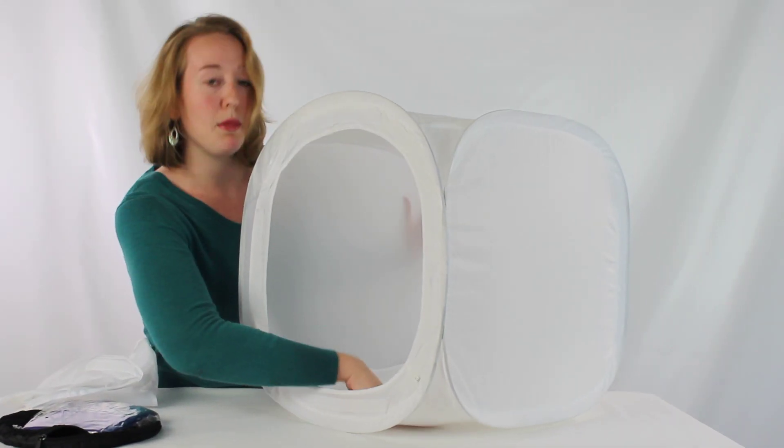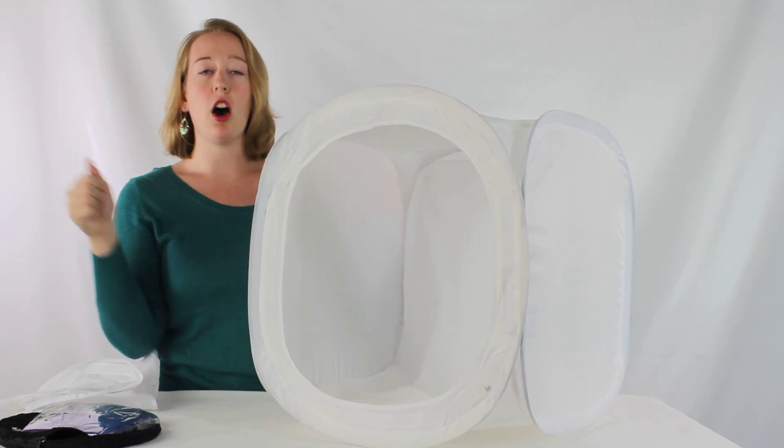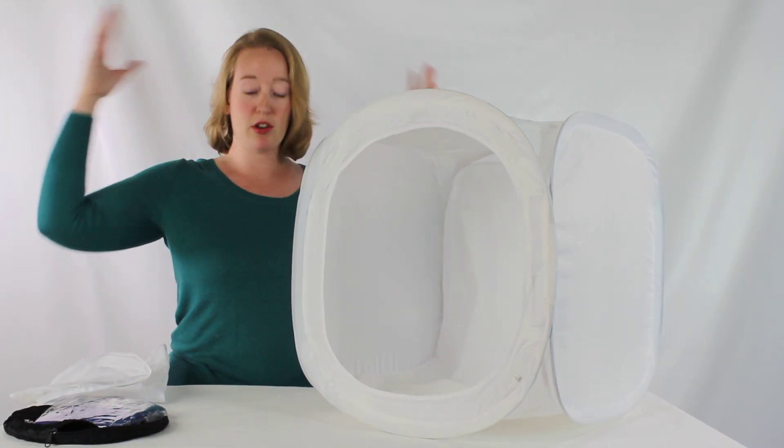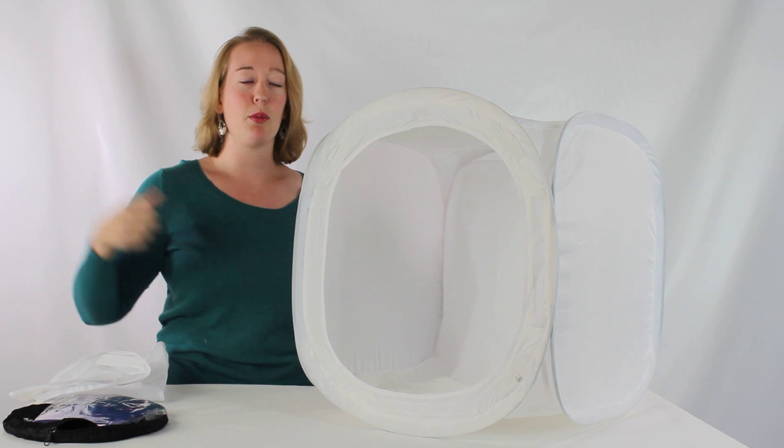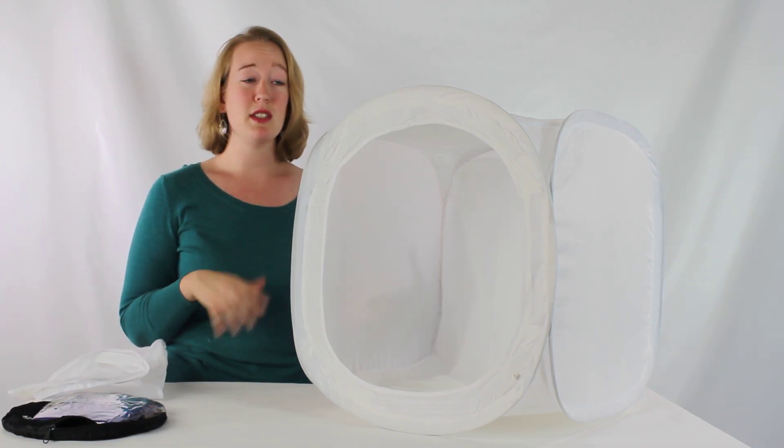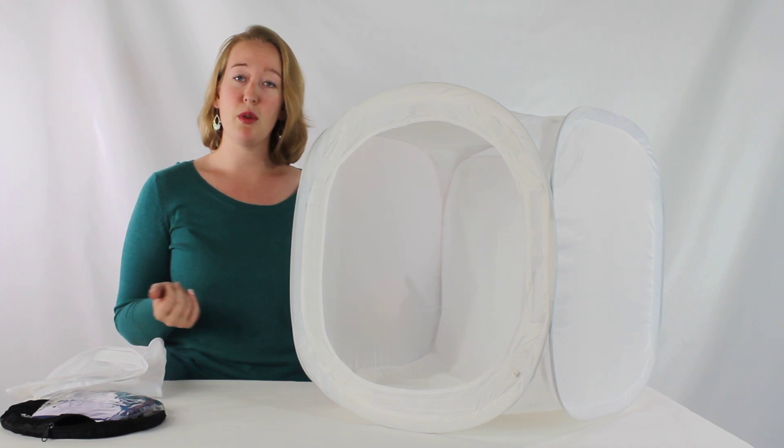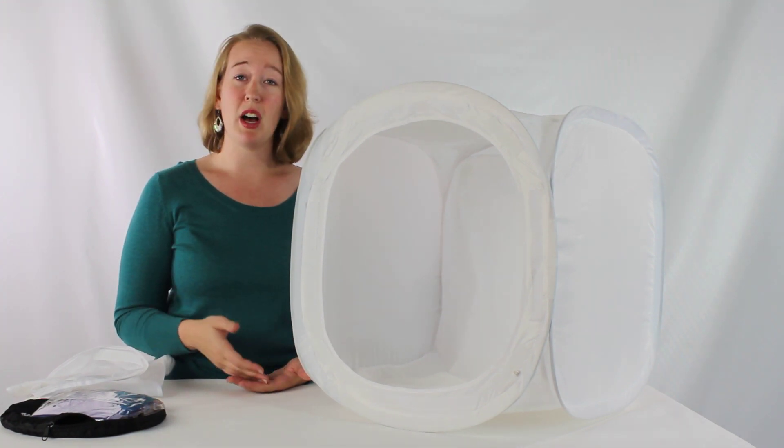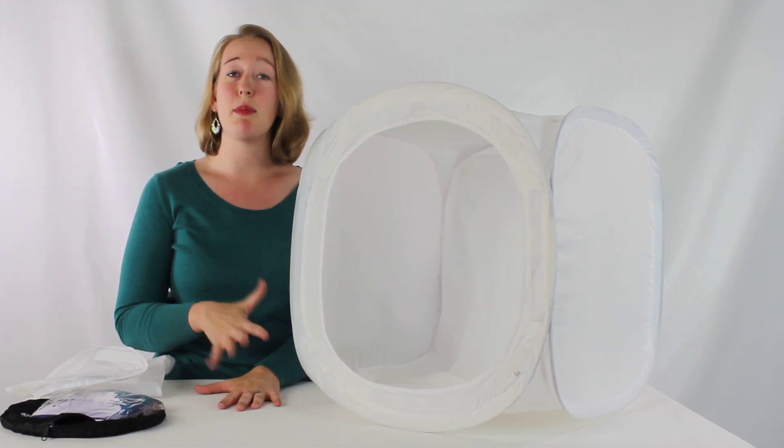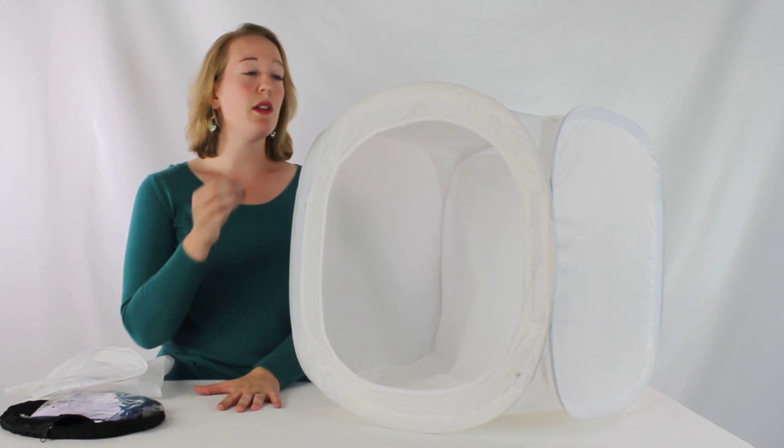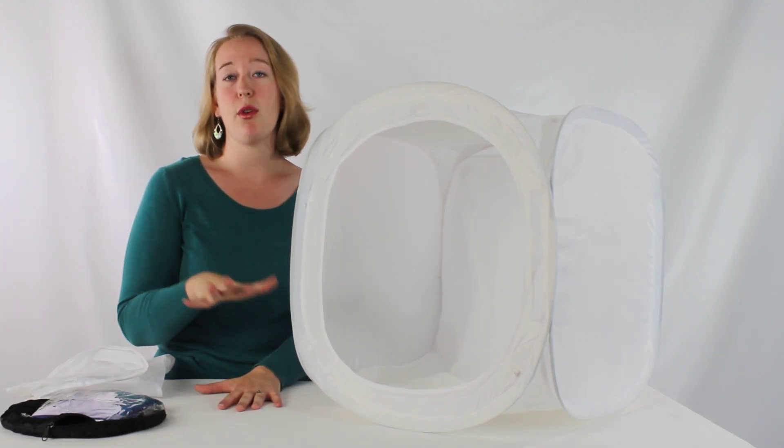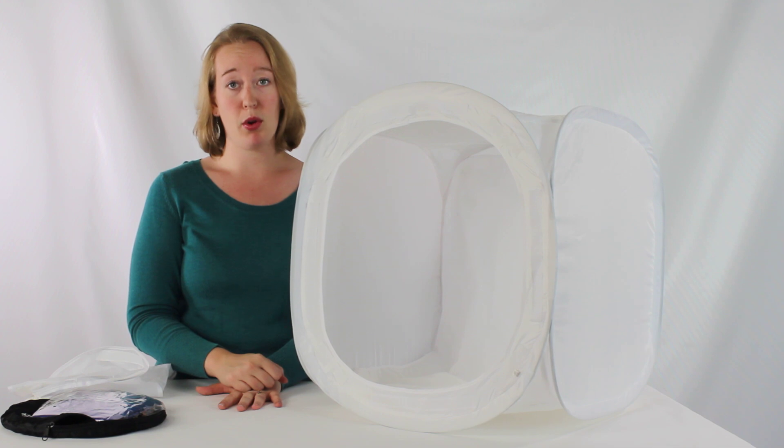Now you'll notice this is not going to be stretched taut like your backdrops would be on a background support stand where you have clamps pulling it tight. So it's going to be important that you steam these backdrops to get them smooth, or perhaps use a cool iron with parchment paper in between to keep them from scorching. But whatever method you use, go ahead and get those wrinkles out or remove them in post-production.